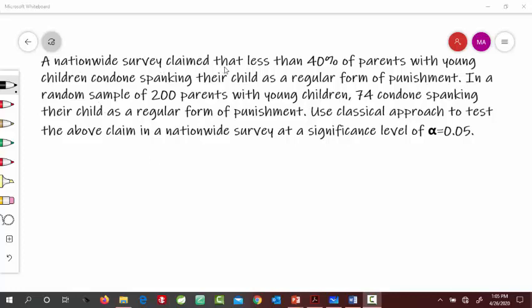A nationwide survey claimed that less than 40% of parents with young children condone spanking their child as a regular form of punishment. In a random sample of 200 parents with young children, 74 condone spanking their child as a regular form of punishment. Use classical approach to test the above claim in a nationwide survey at a significance level of alpha equals 0.05.